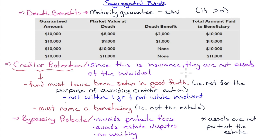The third feature is creditor protection. Since this is insurance, the assets are not assets of the individual — when you give $10,000 to an insurance company for a segregated fund, that money belongs to the insurance company. So if you get sued and lose everything, creditors can't touch it. However, the fund must have been set up in good faith — not specifically to avoid creditors, not within the last year before insolvency, and not while already insolvent.